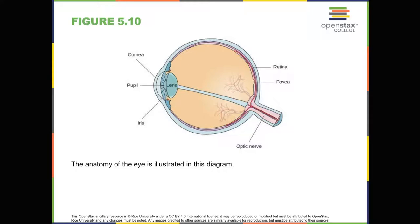Anatomy of the Visual System. The eye is the major sensory organ involved in vision. Light waves are transmitted across the cornea and enter the eye through the pupil. The cornea is the transparent covering over the eye. It serves as a barrier between the inner eye and the outside world, and it's involved in focusing light waves that enter the eye. The pupil is the small opening in the eye through which light passes.